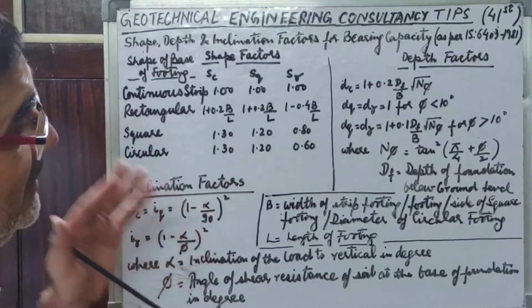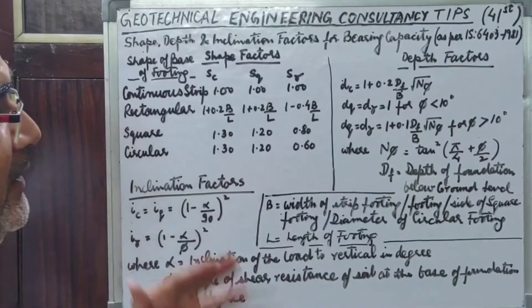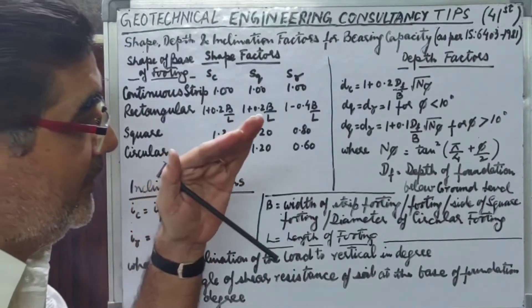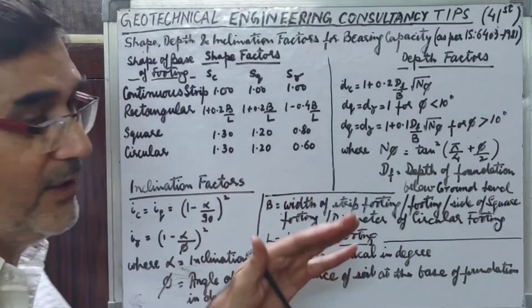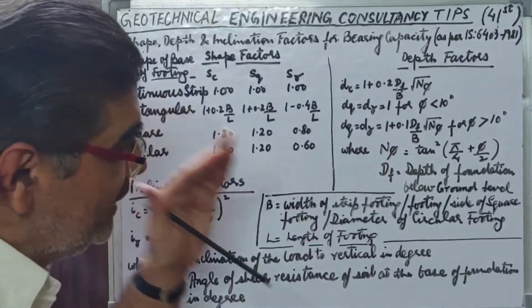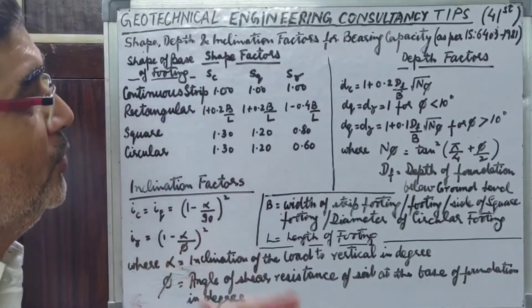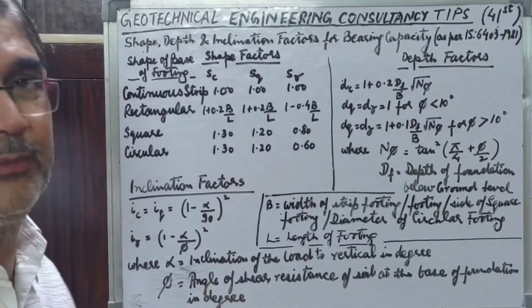So these are three very important factors alongside the bearing capacity factors Nc, Nq, N gamma, with Q surcharge and W dash water table correction factor, which need to be calculated prior to starting the bearing capacity calculations for any desired or proposed foundation for any particular structure.